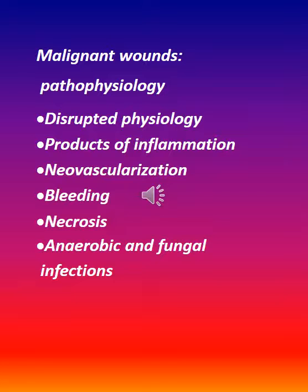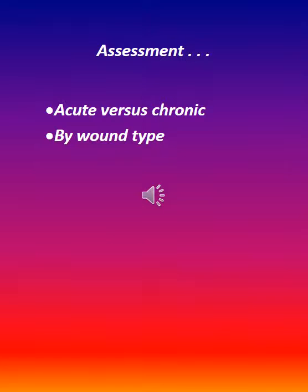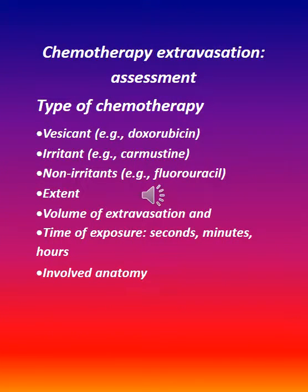Assessment: acute vs. chronic, by wound type. Chemotherapy extravasation assessment includes type of chemotherapy — vesicant (e.g., doxorubicin), irritant (e.g., carmustine), or non-irritant (e.g., 5-fluorouracil) — as well as extent, volume of extravasation, and time of exposure (seconds, minutes, or hours).